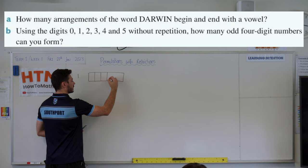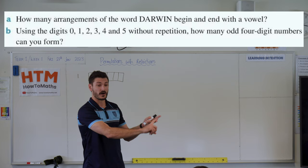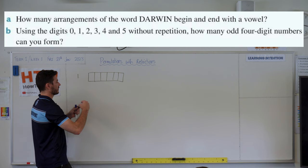One, two, three, four, five, six. Six even boxes. And they have to begin and end with a vowel. So first of all, let's do the begin. We have the vowels A and I only, right? So when I'm starting off this word, I have two possible options. So I pop the two in, and they have to end with a vowel.